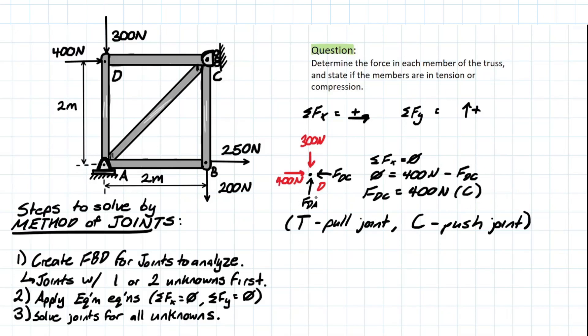And then similarly, we can solve for FDA. It's going to be a very similar process where we take summation of forces at y. We're going to take negative 300 because it's going downwards, and then we have plus FDA. And FDA is going to be 300 newtons. Once again, it's in compression because it's pushing at that joint. So there's two of our answers already.